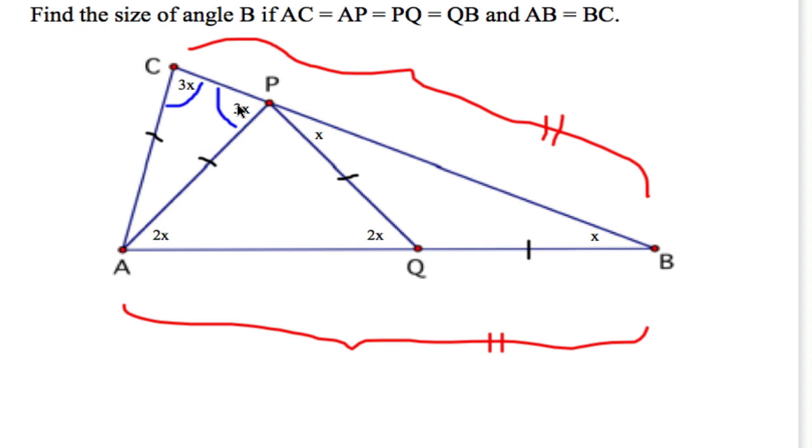Now this PCA over here is isosceles, which means that this is also 3X. And don't forget that the big triangle is isosceles, so these green angles are equal. Making this little bit right here have to be equal to X.